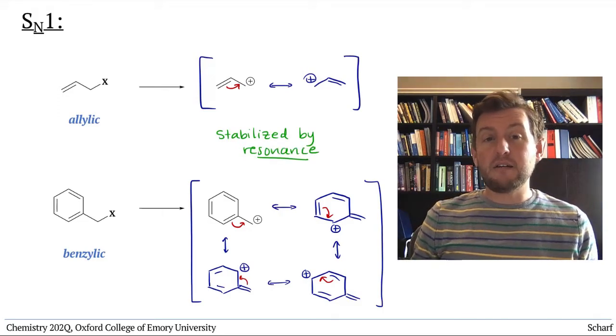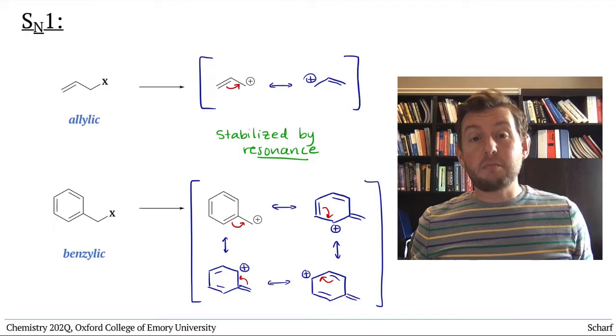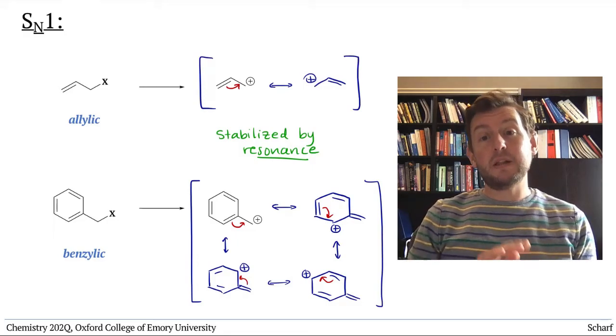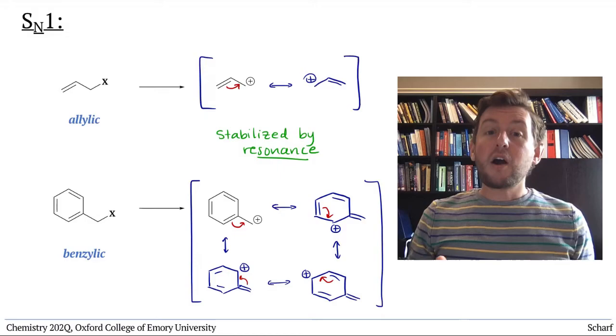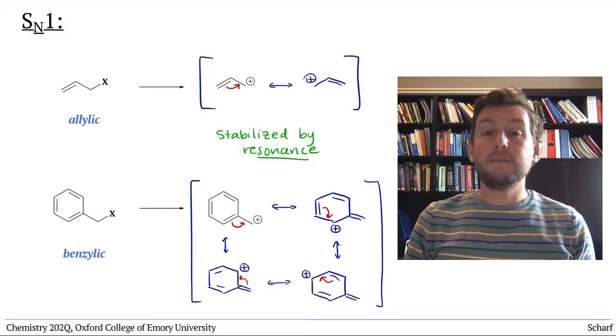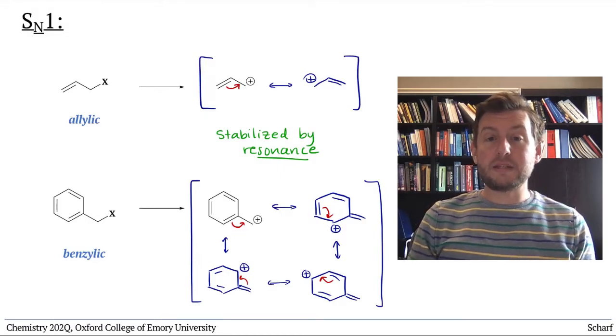So secondary or even primary carbocations, which are typically quite slow to form if they form at all, are formed more rapidly if they are allylic or benzylic.